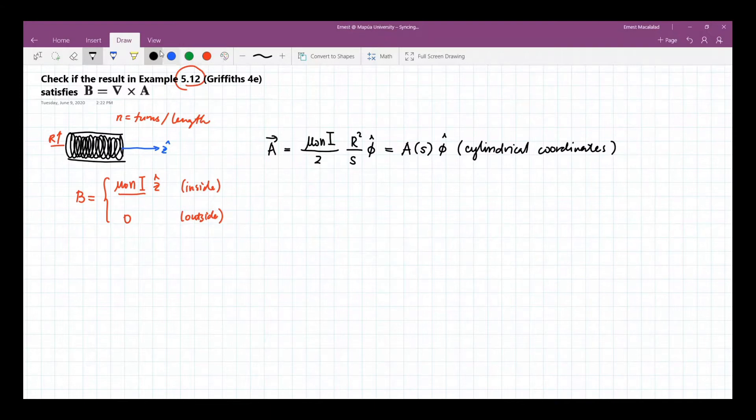Now in cylindrical coordinate system, the curl of A is given by the following. Just remember that the component of your A is along phi, so only the terms with phi component will be used. And the end result would be along s and along z.